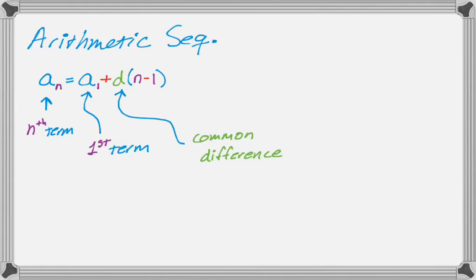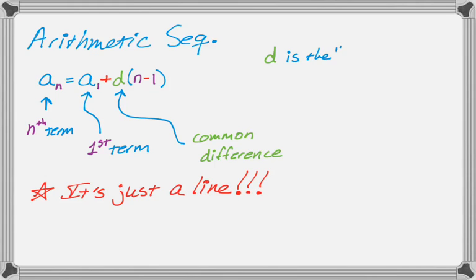And because of the way it's all set up, and as I've already mentioned, it's actually just a line. And since it's just a line, everything you know about writing an equation of a line still applies to this. And if you look at it as a line, you'll notice that d is actually the slope of the line.